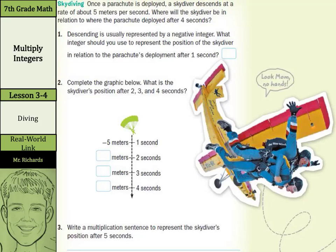Once a parachute is deployed, a skydiver descends at a rate of about 5 meters per second. Where will the skydiver be in relation to where the parachute deployed after 4 seconds?